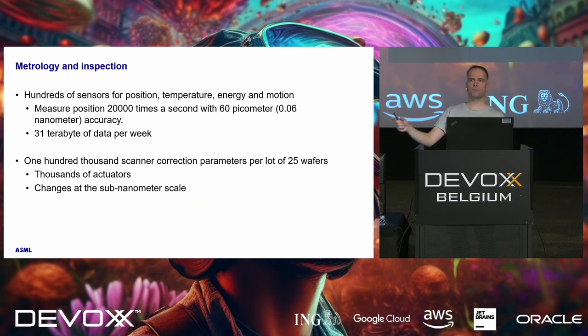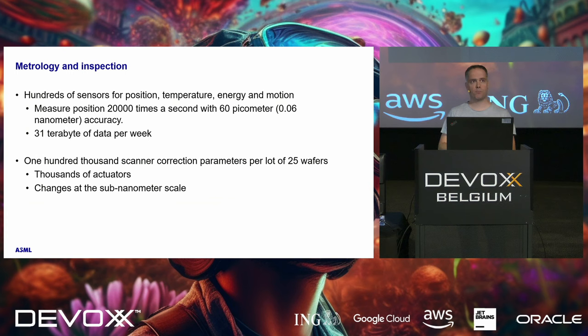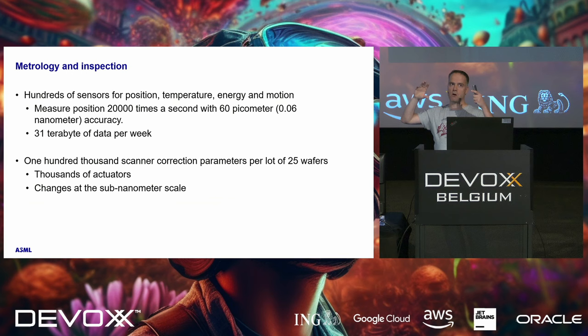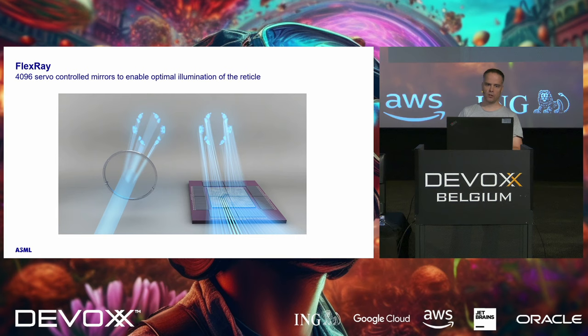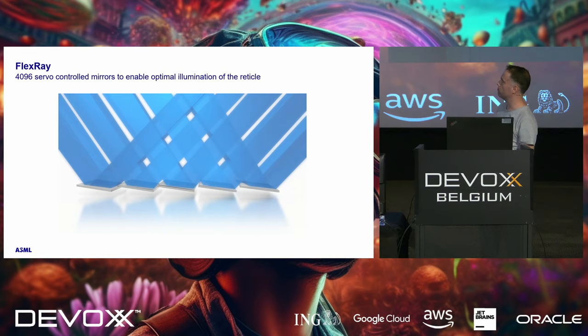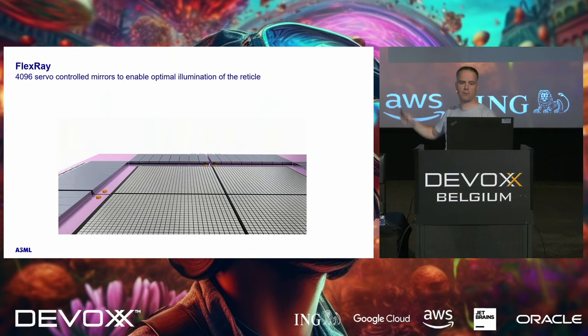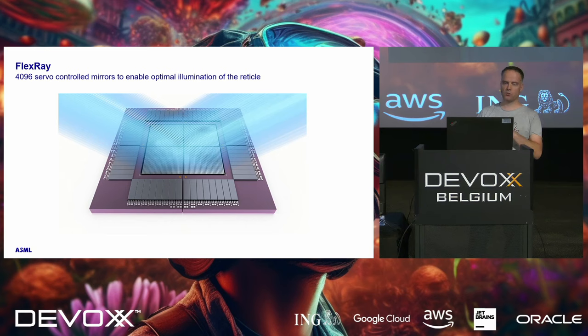Let's imagine the laser is still relatively cold — when it heats up, you might need to adjust the mirror or cool it more. Every change requires recalibration. Even if there is an earthquake a couple of countries away, the machine needs to be recalibrated. There is what they call a mirror, but it's actually more than 4,000 individually controllable mirrors with different parameters. Depending on what we want, we can change those — that's one example of the things we can control in the machine.